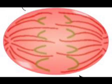Next is anaphase. During anaphase, the chromosomes are pulled apart from each other towards opposite poles via the spindle fibers. This process can be divided into two sections: early anaphase and late anaphase.